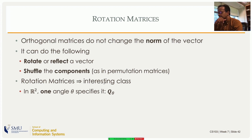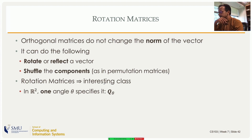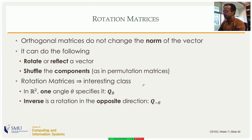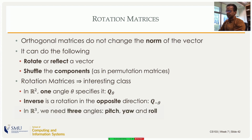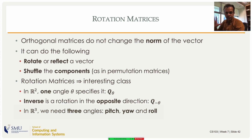In the simpler situation of a normal R2 plane with only x and y, to specify a rotation you need only one angle. You can call the rotation matrix Q-sub-theta, theta being the angle through which it rotates. The inverse of that matrix is the same matrix with theta replaced by minus theta, because rotating in the opposite direction gives the inverse operation. In R3 you need three angles to specify a rotation, and there is a specific order in which you specify them.